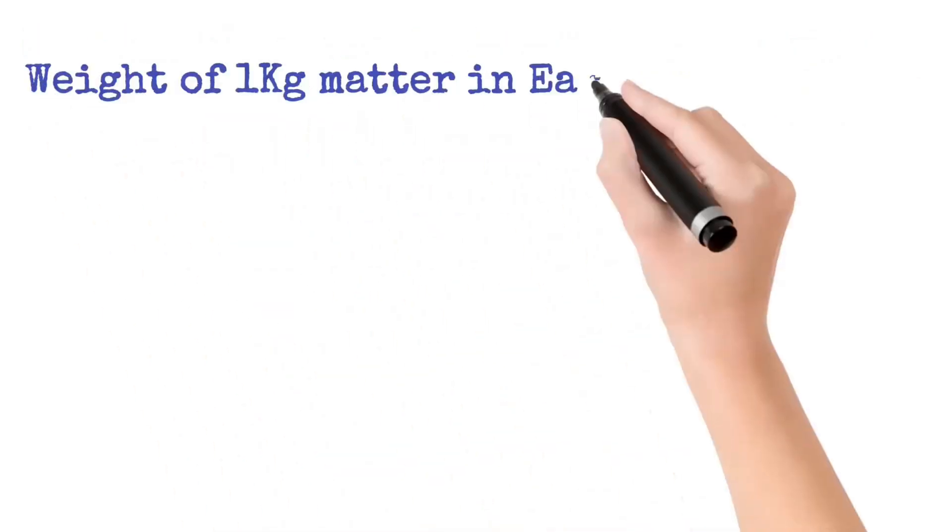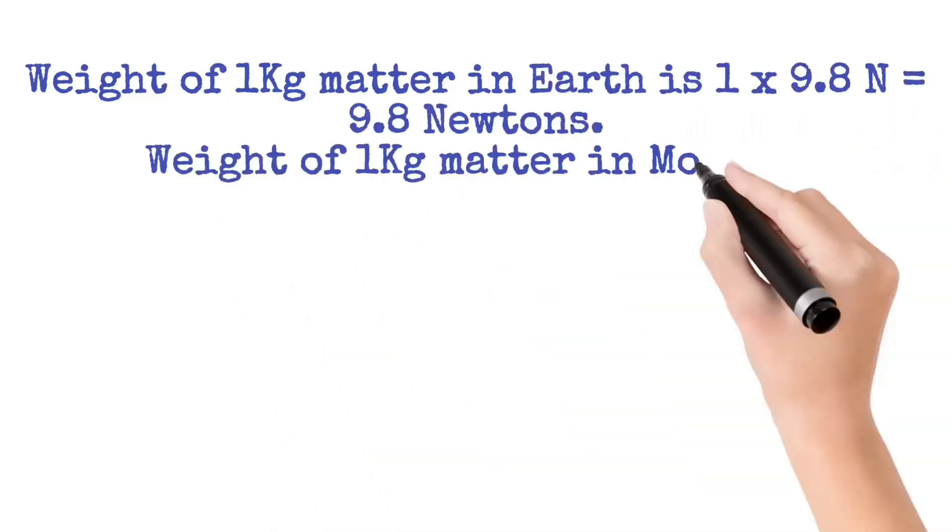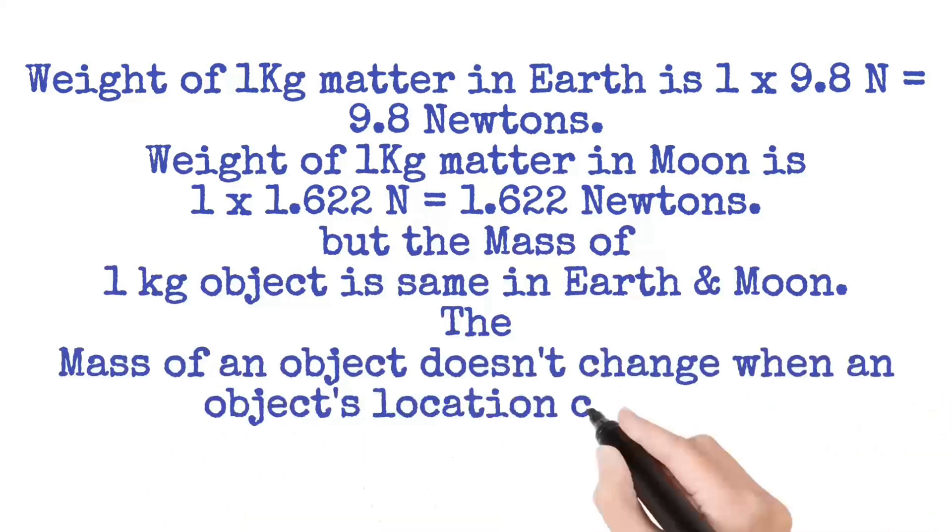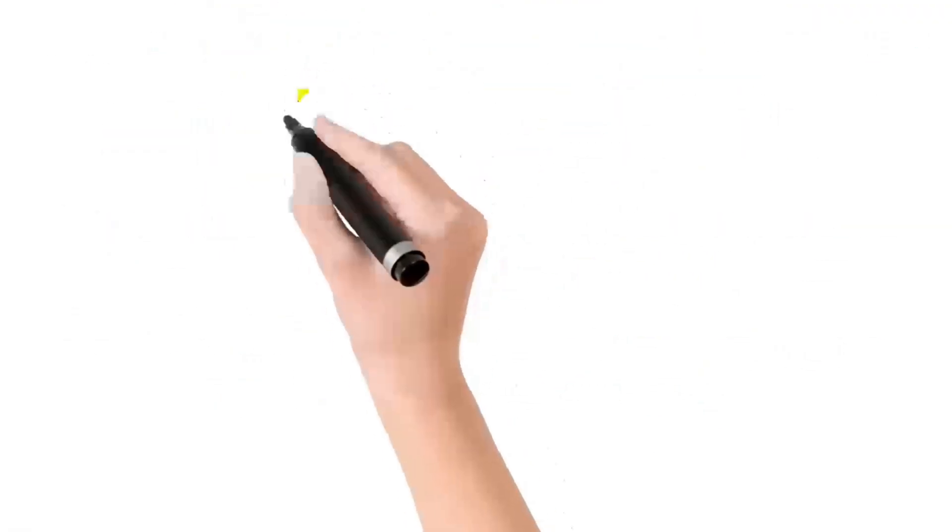Weight of 1 kilogram on Earth is 9.8 newtons, and it is 1.622 newtons on the Moon. But the mass of 1 kilogram is the same on Earth and Moon. It does not change with the object's location change.